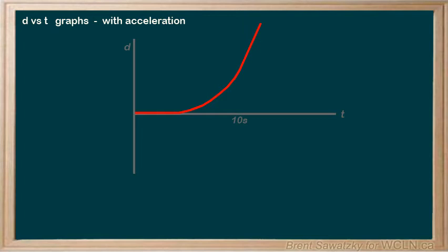To figure out the slope at a particular point on a curve like this, we use tangent lines. Let me show you.